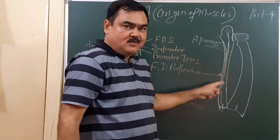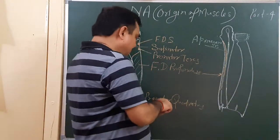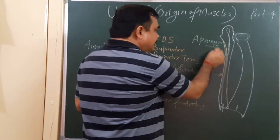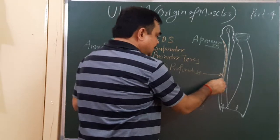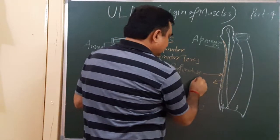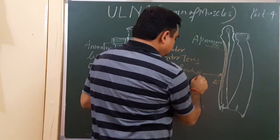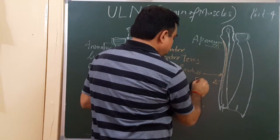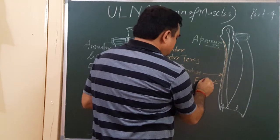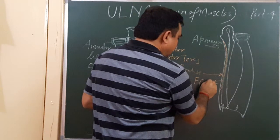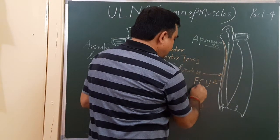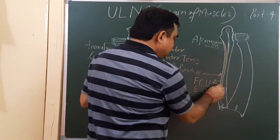Another muscle arises from this aponeurosis. These muscles are flexor carpi ulnaris and extensor carpi ulnaris.